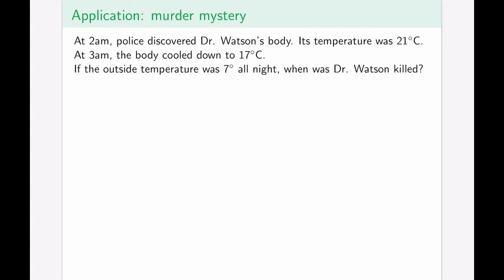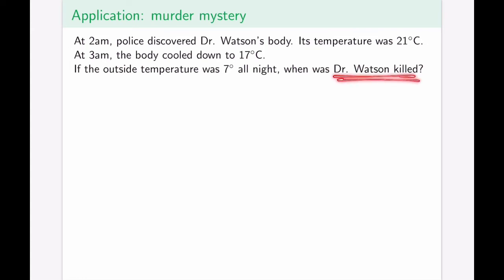This is a forensics problem. At 2 a.m., police discover Dr. Watson's body, and the temperature is 21 degrees Celsius. At 3 a.m., the temperature has cooled to 17 degrees Celsius. The outside temperature was 7 degrees all night. The question is when Dr. Watson was killed. The change in temperature at two different times allows us to apply Newton's law of cooling to calculate K, the cooling constant, and then figure out when the body was at normal body temperature — approximately 37 degrees Celsius.